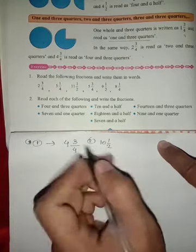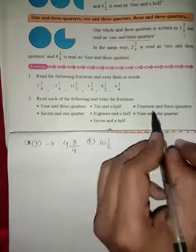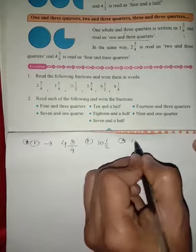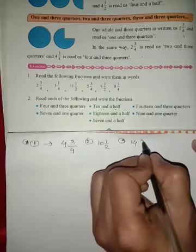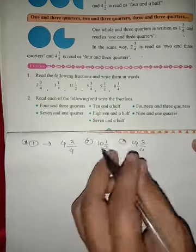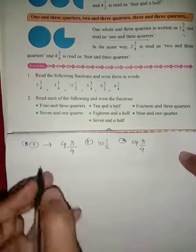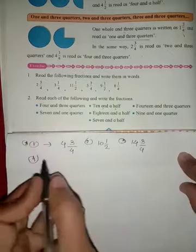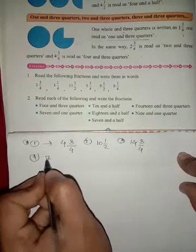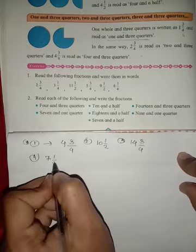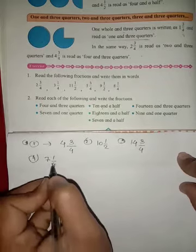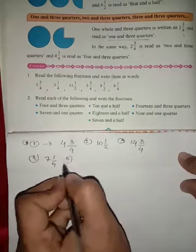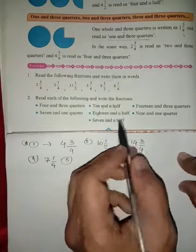Fourteen and three quarters — fourteen and three quarters means three upon four. Number four is seven and one quarter — one quarter means one by four. Seven and one quarter is written as seven and one upon four.